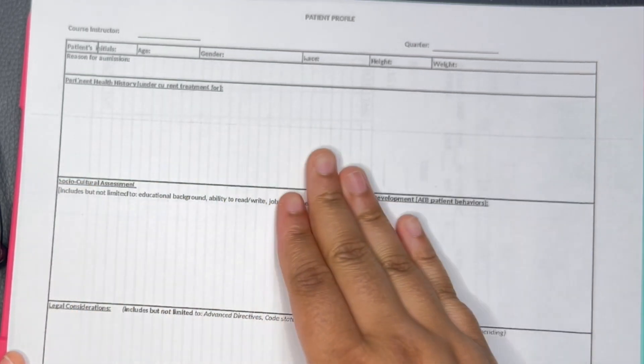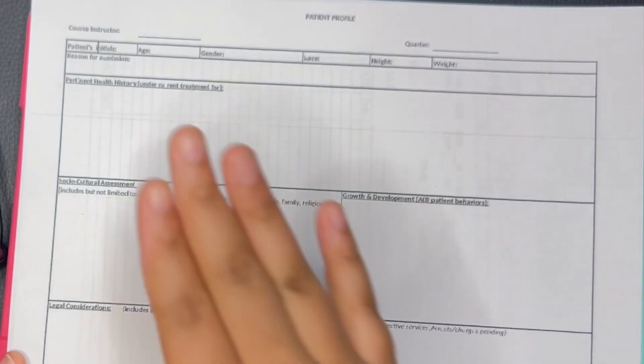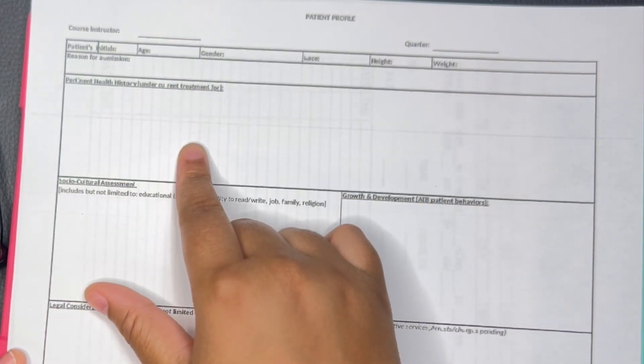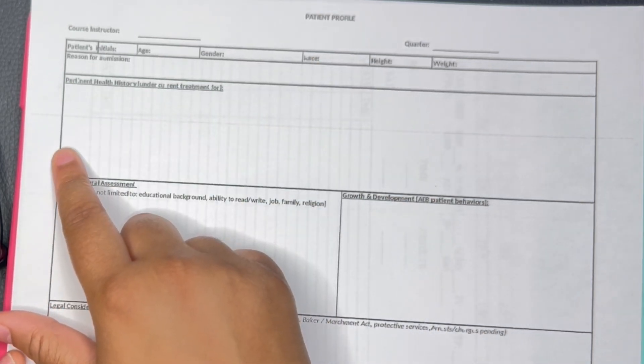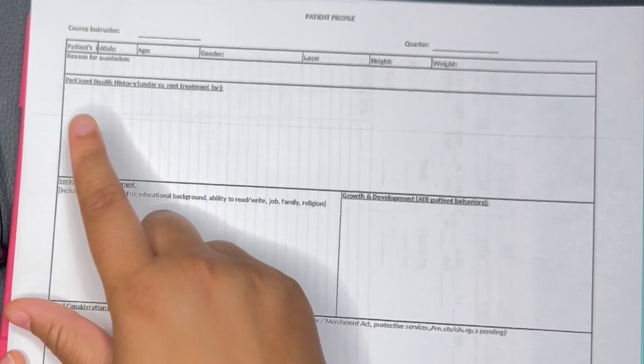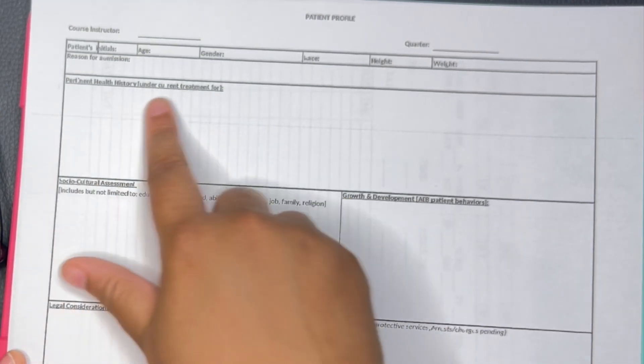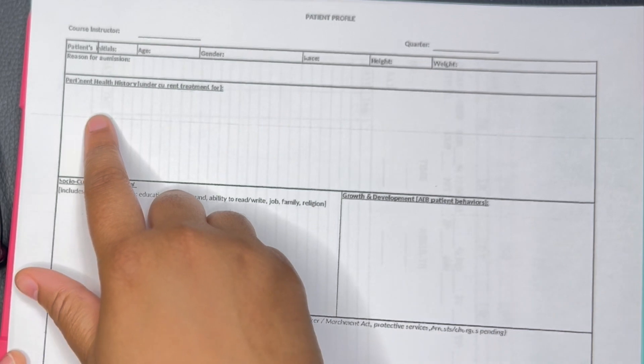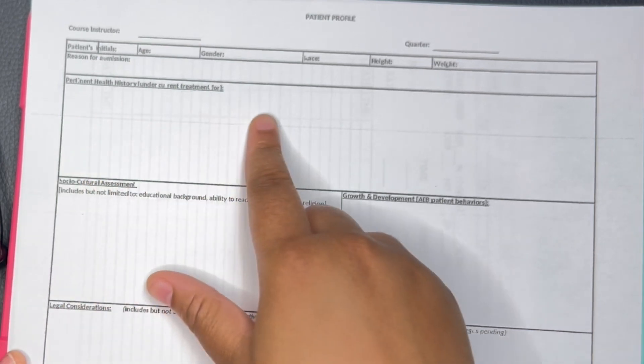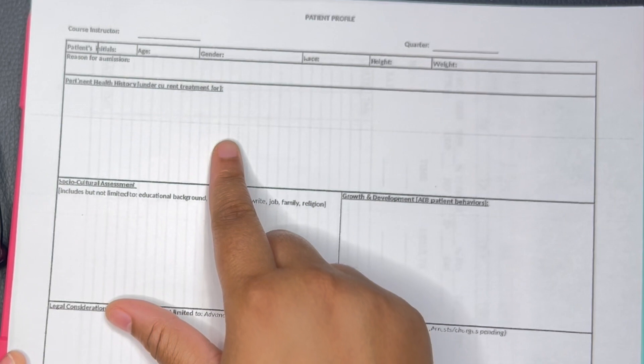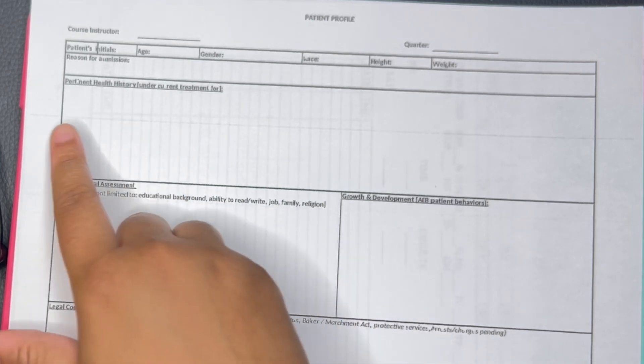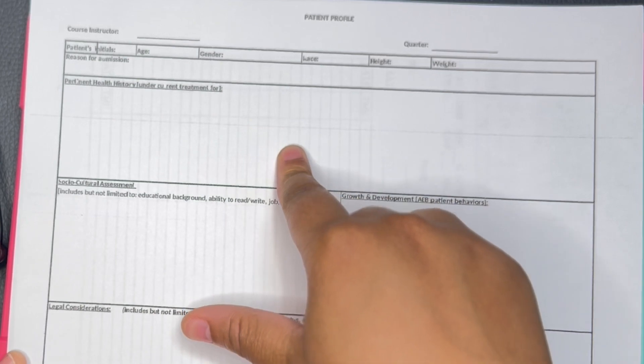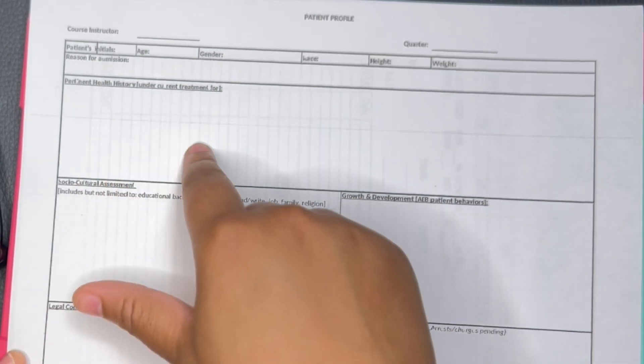Then you got the pertinent health information, basically what health information is impacting what's going on with the patient now. Let's say the patient just had an amputation or something. That can be pertinent information if they had something dealing with their diabetes that wasn't managed properly which led to an amputation. The amputation or the actual surgery would be information that you would put here because it's pertinent to what's going on right now.